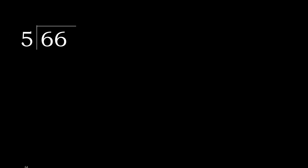66 divided by 5. 6 is not less, therefore with 6: 5 multiplied by which number is nearest to 6 but not greater? 5 multiplied by 2 is 10 — that is greater. 5 multiplied by 1 is 5. Ok, 5 is not greater. 6 minus 5 is 1.